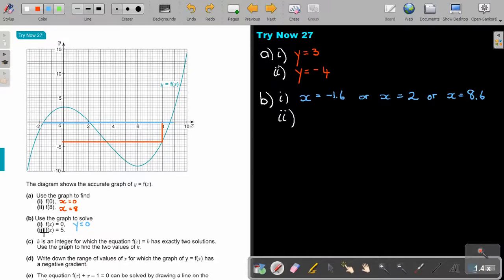Now the next one. f(x) equals 5, so again, it is y equals 5. So draw that line, y equals 5. Now if you do that, you will find it's here. And again, where it intersect, then you just go down. So it's 9.2. It looks like 9.2. So x equals 9.2.